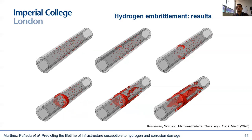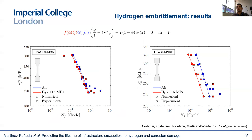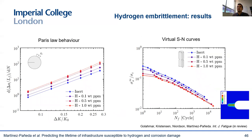We have extended the framework to fatigue. We just need to add a fatigue degradation function, and then we can deliver predictions based on the material toughness and nominal material properties. You can see here virtual S-N curves with and without hydrogen, reaching very good agreement with experiments. We can also predict the influence of hydrogen on Paris Law coefficients or deliver virtual S-N curves for any geometry. The Paris Law behavior and the S-N curve are an output of the calculation — a prediction, not an input. Fatigue failures can be predicted for arbitrary loading histories and geometries using an energy-based approach founded on the thermodynamics of fracture, multi-physics modeling, and a mechanistic hydrogen degradation law.